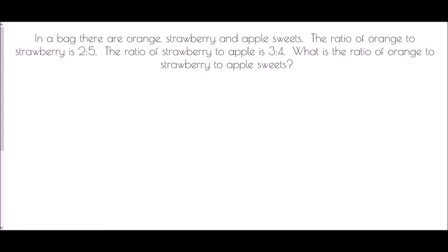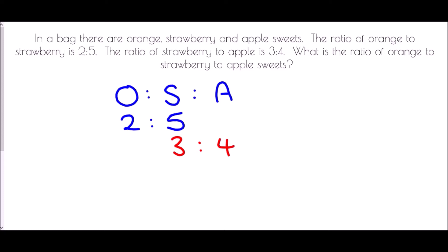In the next one, in a bag there are orange, strawberry and apple sweets. The ratio of orange to strawberry is 2 to 5. The ratio of strawberry to apple is 3 to 4. What is the ratio of orange to strawberry to apple? Again, we want to combine them together by looking at the overlap — there is strawberry in both cases. I need a common multiple of 5 and 3. The easiest way to find that common multiple is to multiply them together.